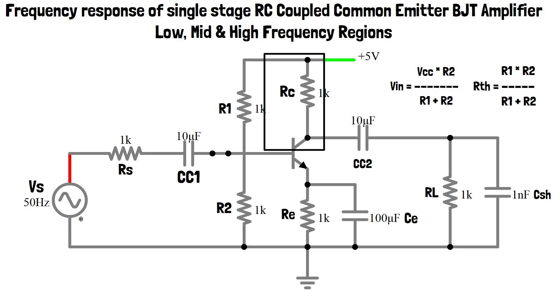RC is called as collector bias resistor. It is used to make the transistor operate in active region. For active region, VCE is directly proportional to Vcc by 2.